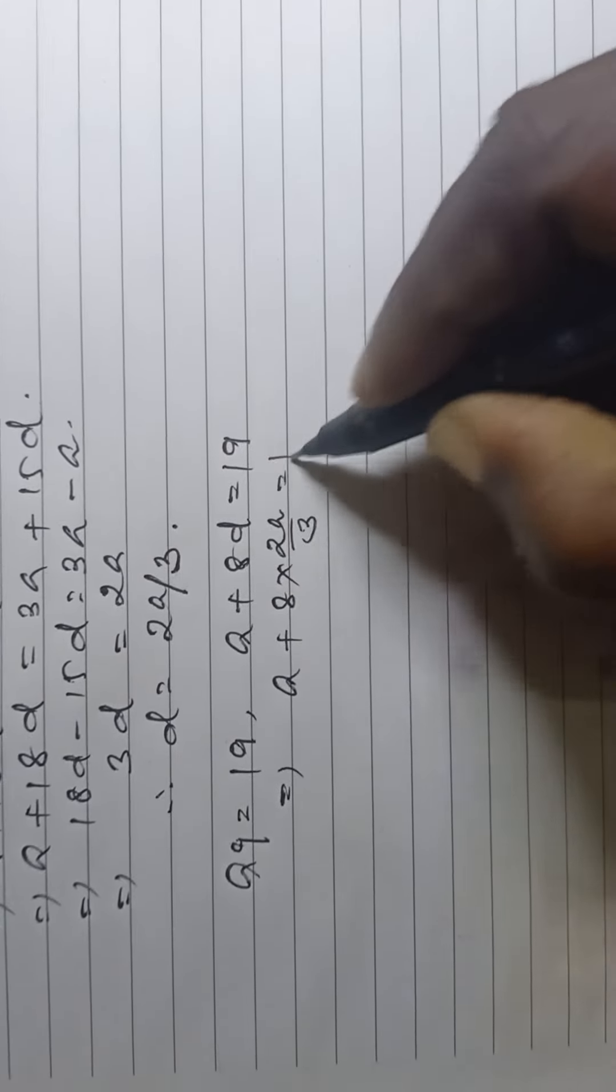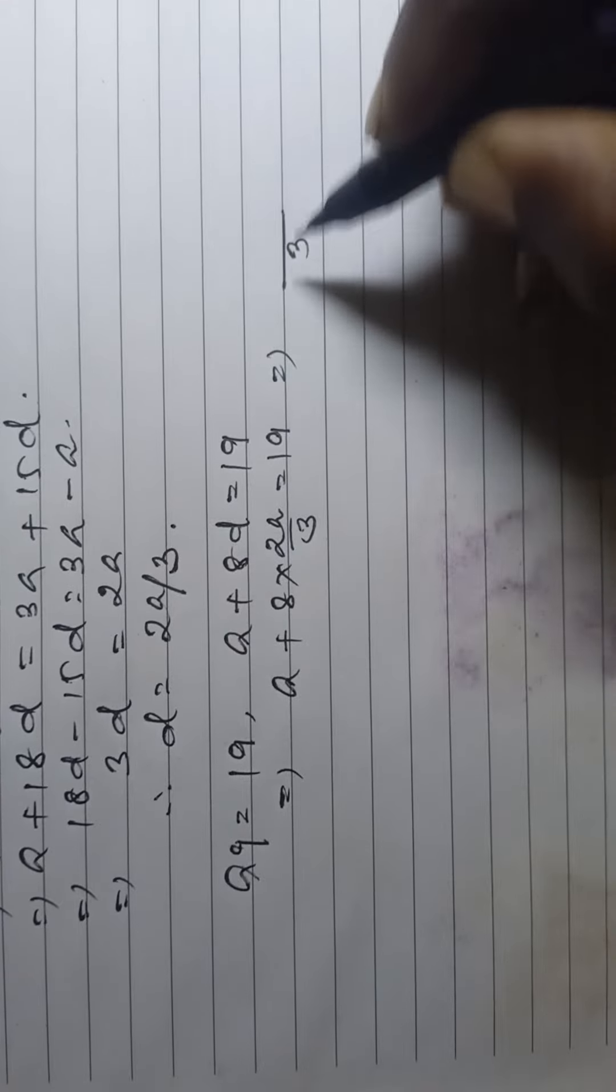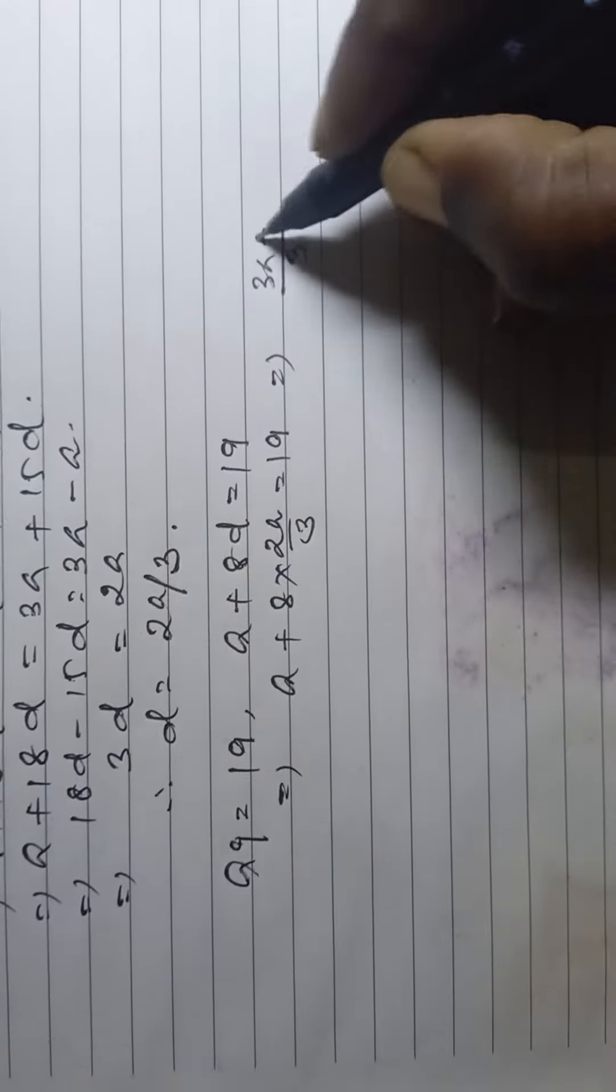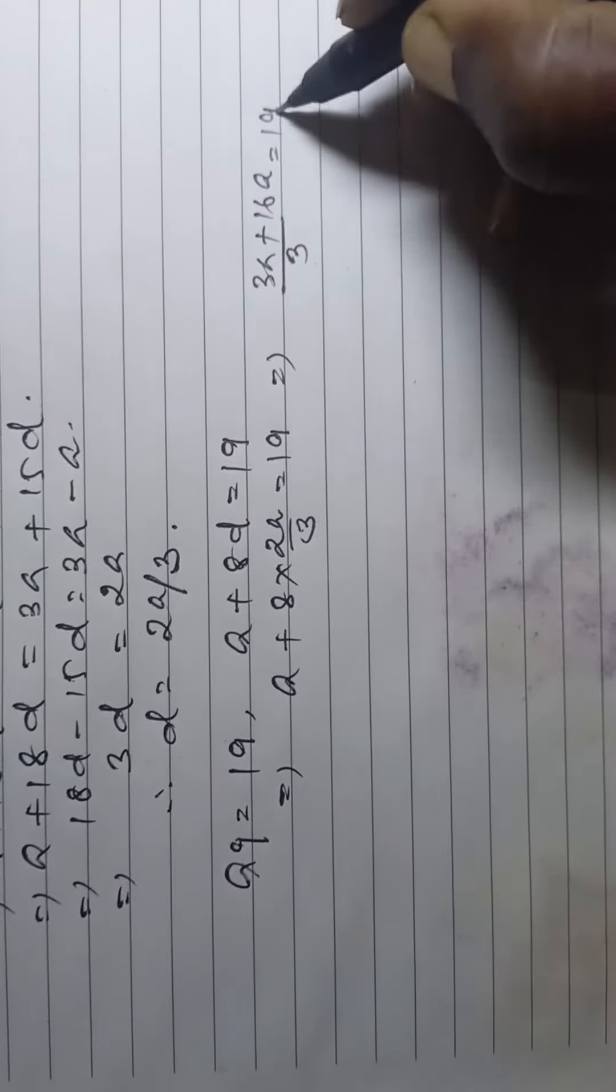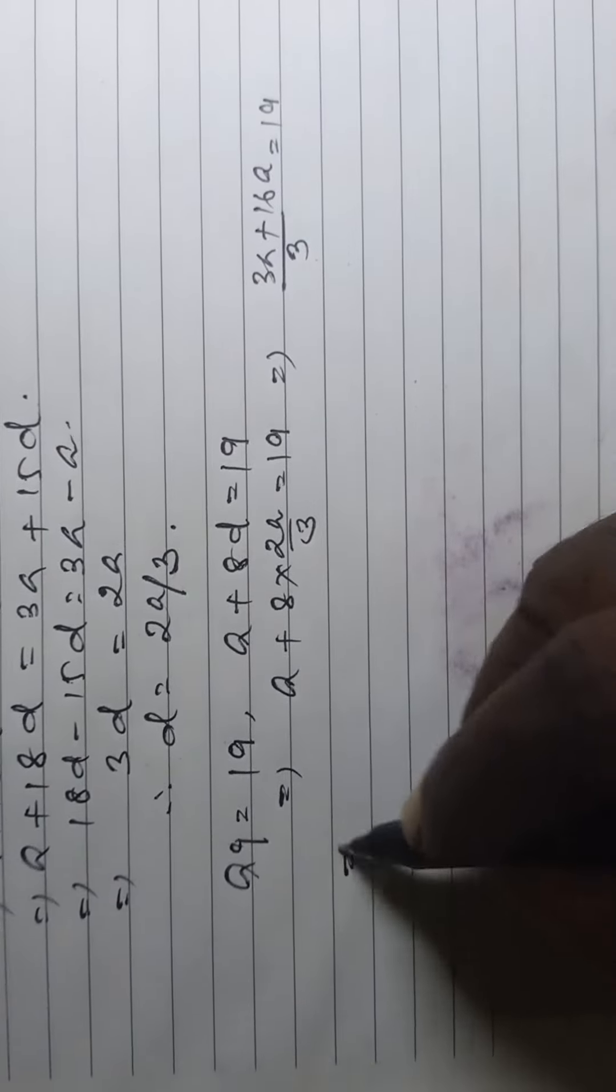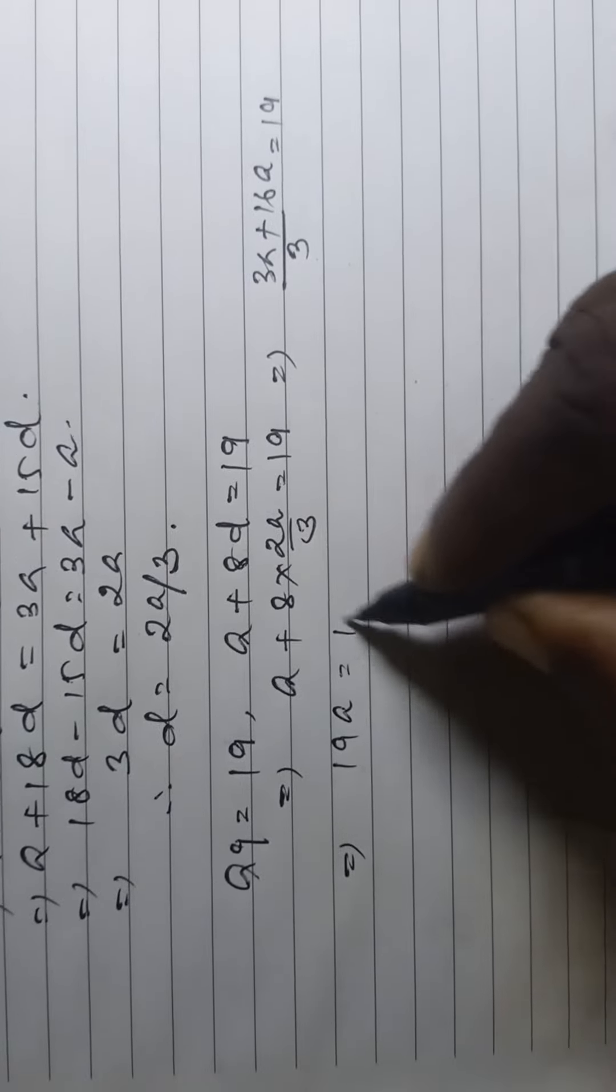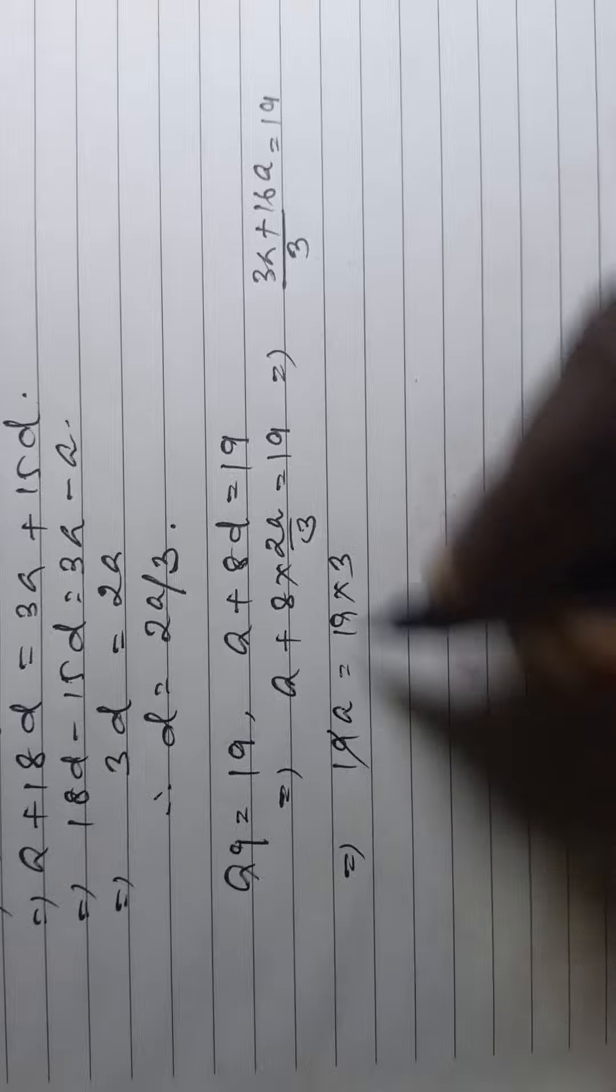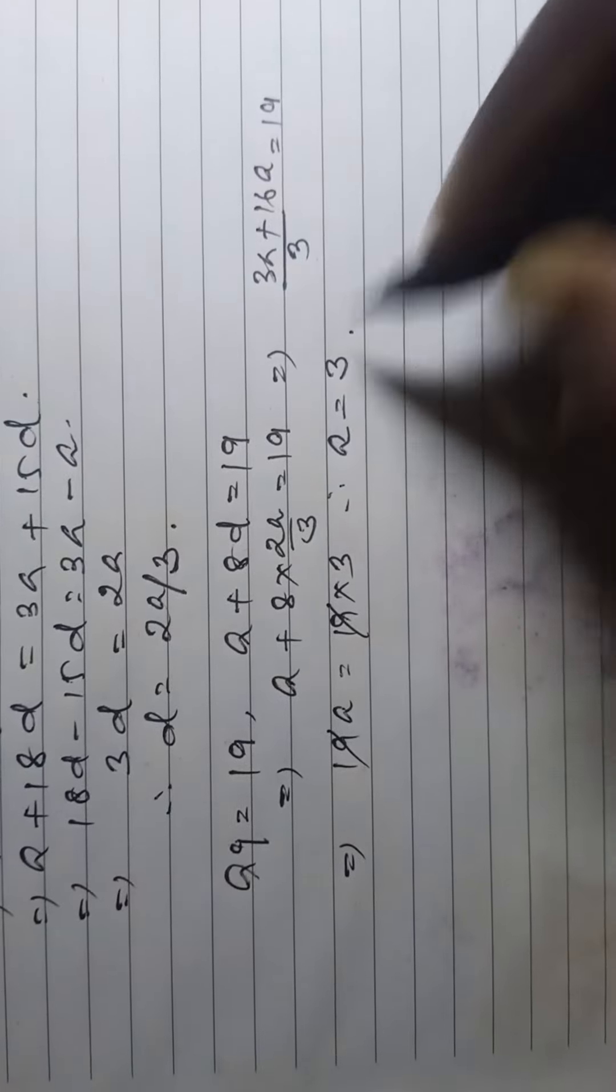So, this is 3a plus 16a is equal to 19 into 3. 19a is equal to 19 into 3. So, a is equal to 3.